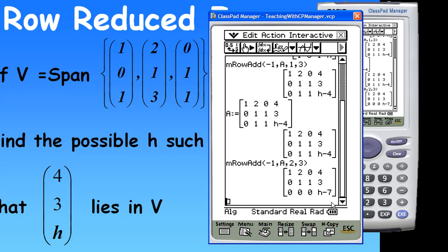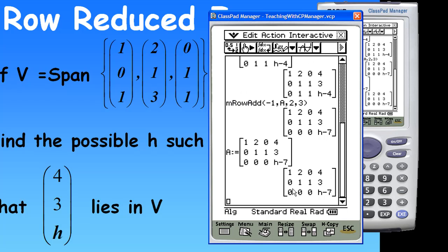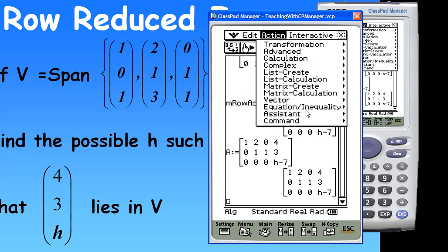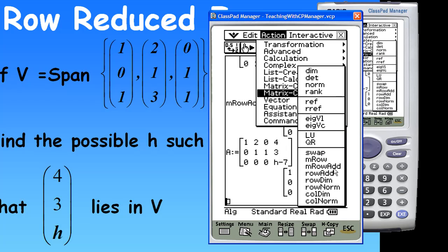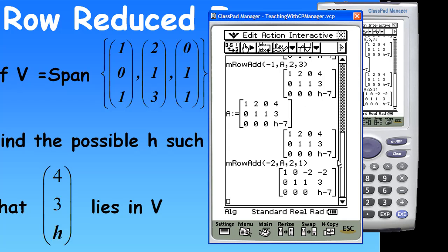So, maybe I'll do one more time to get to the row reduced form again. So, I'm going to call this matrix A again. I copy and paste. So, I got this matrix A. Now, I want to do a row operation. Action, matrix calculation, mRowAdd. Now, this time, I'm going to multiply by minus 2 to the matrix A. Apply to the second row, to the first row. And, this will be the row reduced form.